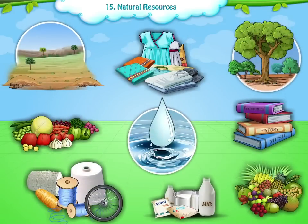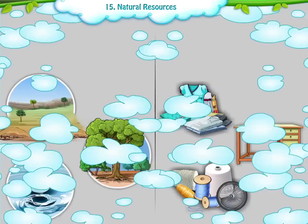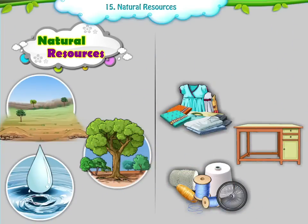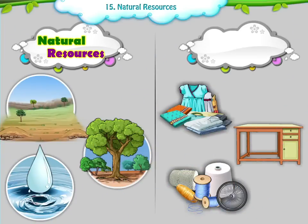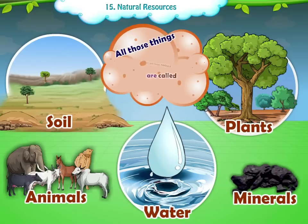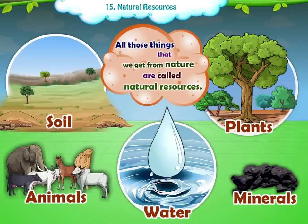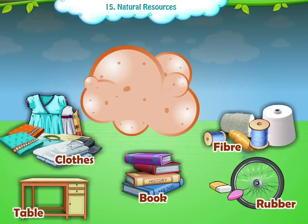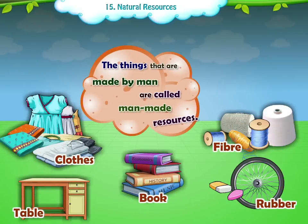We use many things in our daily lives. Some of them are natural, while the others are man-made. All those things that we get from nature are called natural resources. The things that are made by man are called man-made resources.